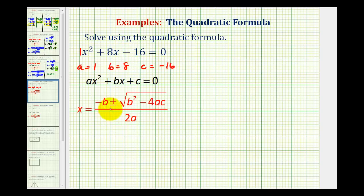And now we'll start by performing the substitution into the quadratic formula. So we would have x equals negative 8 plus or minus the square root of 8 squared minus 4 times 1 times negative 16, all over 2 times 1.